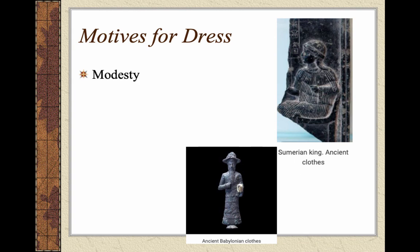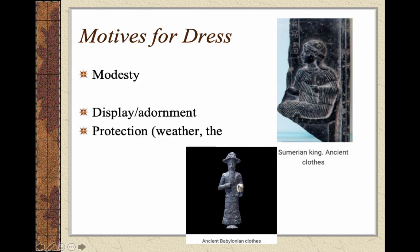In terms of the motives for dress — protection, modesty, display — this is ancient Babylonian clothing. That skirt you see in Sumerian and Babylonian times shows the same type of skirt. You start seeing some differences on the top and for headpieces. Their motivation is a little bit different, but very similar in terms of the skirt.